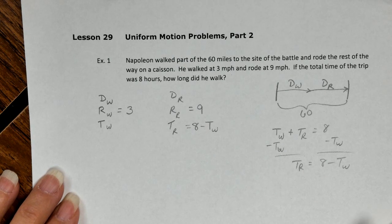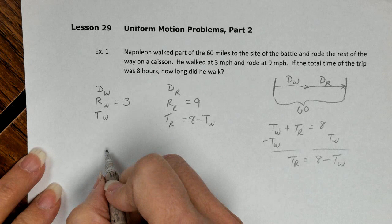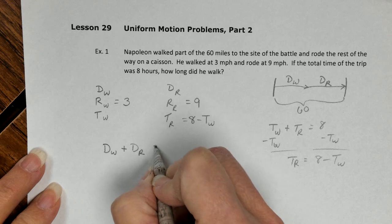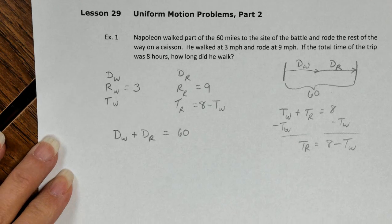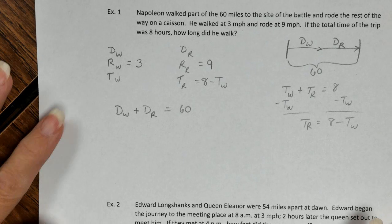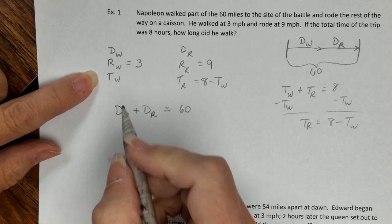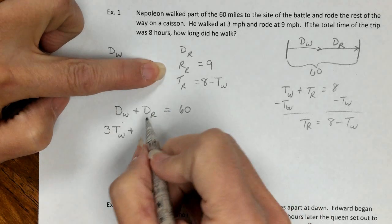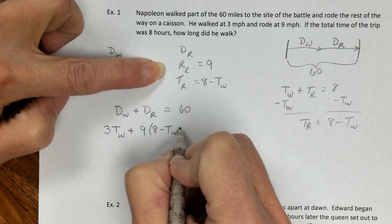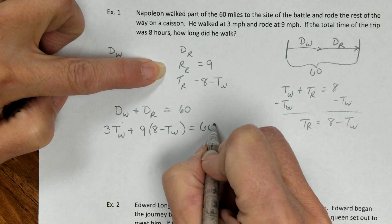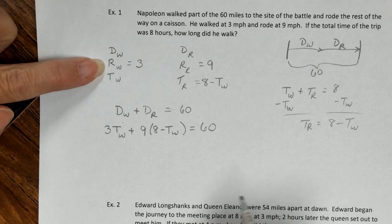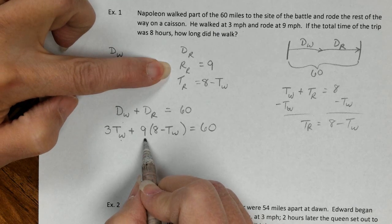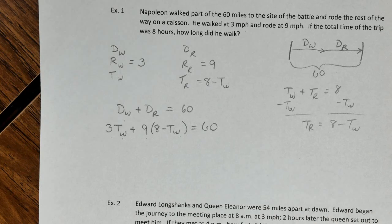Our main equation is based on my little diagram here. His distance walking plus his distance riding is 60. And we know distance is equal to rate times time. So rate times time walking plus rate times time riding equals 60. Rate times time walking, rate times time riding, and then we solve this.